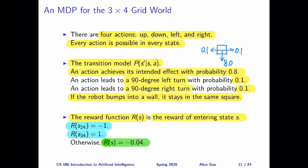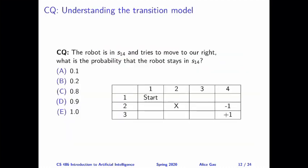It can be tricky to understand the transition model. Let's look at a practice question to make sure you really understand how it works. Suppose the robot is currently in state S14. I've highlighted the state there for you. The robot is trying to move to our right. Let me draw the intended direction for you. Given this intended direction, what is the probability that the robot stays in the same state S14? Think about this yourself and then keep watching for the answer.